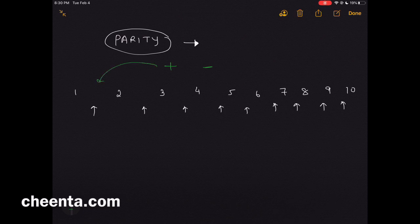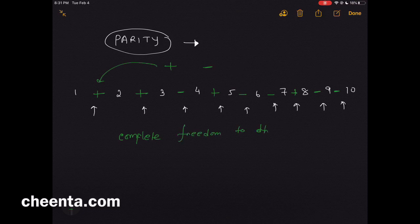So you have two symbols, plus and minus, and you are allowed to throw in these symbols wherever you want. Maybe you can put a plus first, then another plus, then a minus, then a plus, then two minuses, then one plus, maybe after that two minuses and so on. You have complete freedom to do this in whatever way you want.